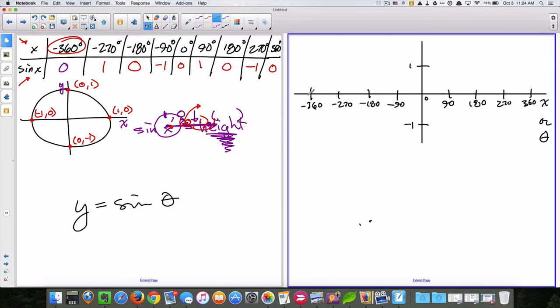So negative 360 is going to be zero, let's change colors, going to be there. And negative 270 is going to be at one, so it's somewhere around there-ish. And negative 180 is going to be back down to zero. And negative 90 is going to be negative one, so it's down here. And zero is going to be at zero. And of course, 90 is going to be at one. And 180 is going to be at zero. 270 is going to be at negative one. And 360 is going to be at zero. So we plotted nine points.